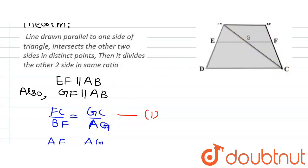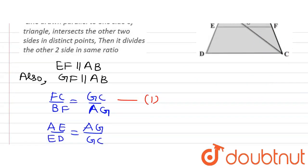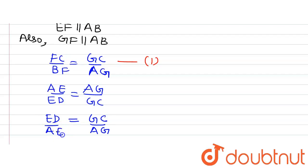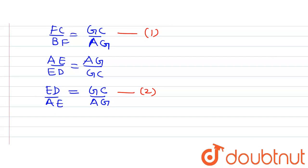Now we can simplify further. Since AE/ED = AG/GC, taking the reciprocal gives us GC divided by AG is equal to ED divided by AE. This is equation 2. From equations 1 and 2, FC divided by BF is equal to GC divided by AG, and ED divided by AE is equal to GC divided by AG. Therefore FC divided by BF is equal to ED divided by AE.